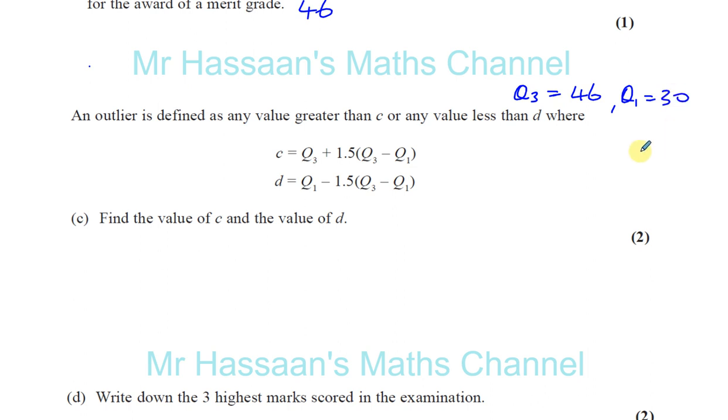So C is going to be Q3 plus, which is 46, plus 1.5 times Q3 minus Q1. Now Q3 minus Q1 is 46 minus 30, which is 16.